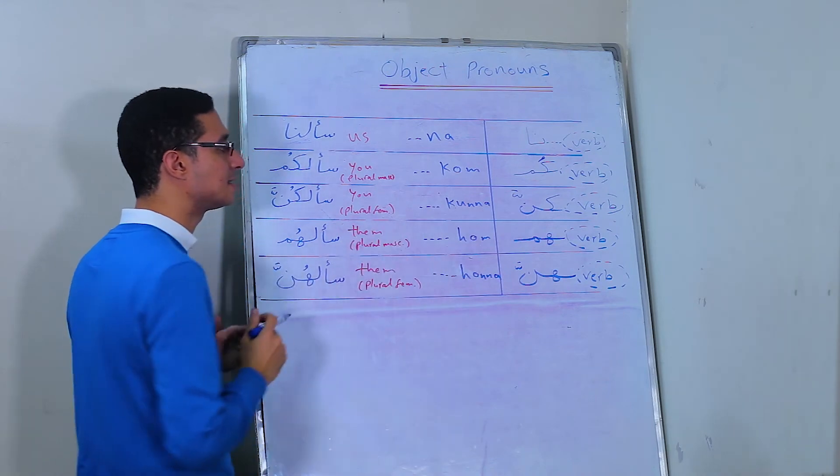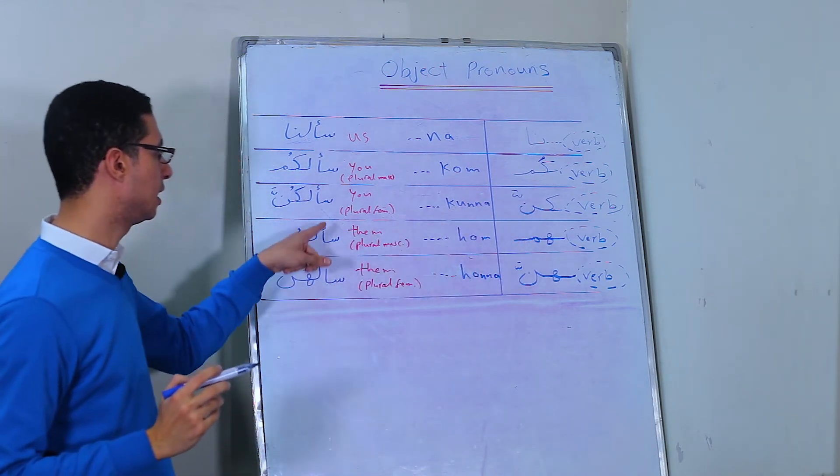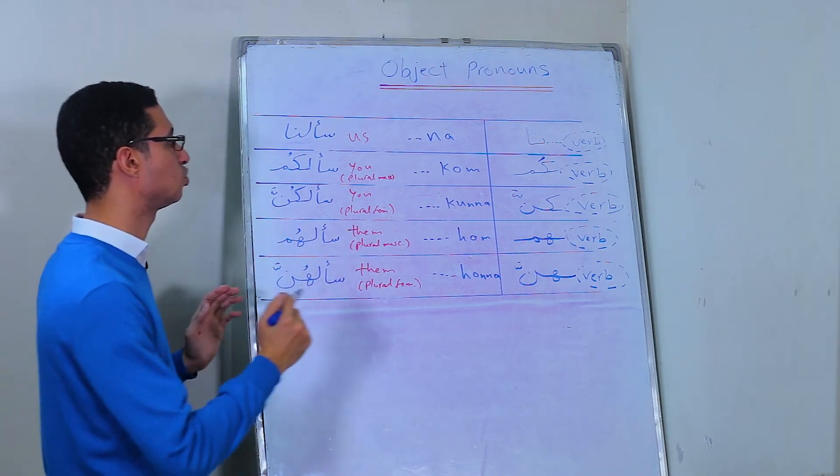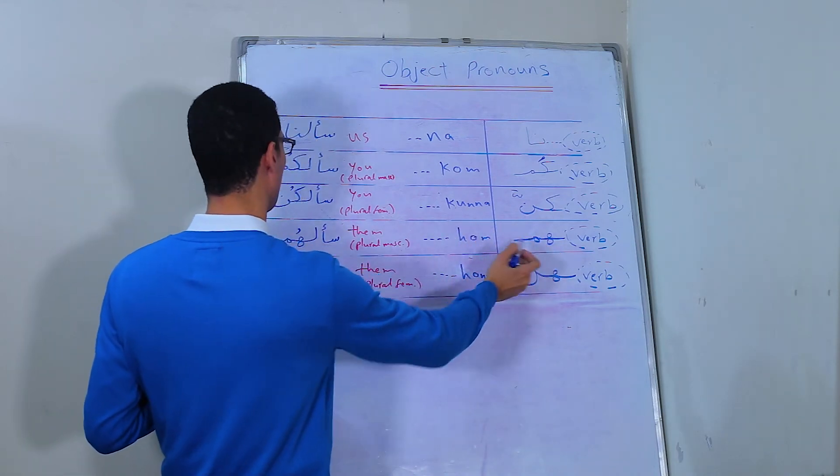The next one is سألكن. It's كن, which is for plural, a group of women or girls. It will be سألكن, he asked you.